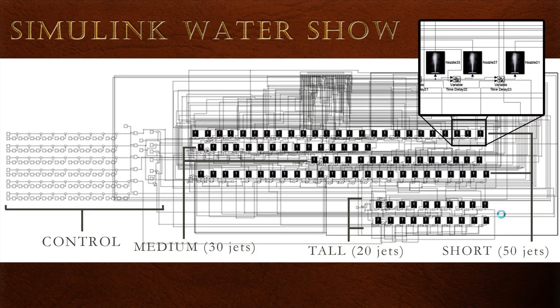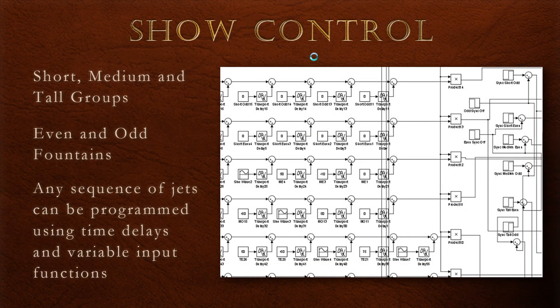Here's our final water show in Simulink. We have 100 water jets: 30 medium, 20 tall, and 50 short jets, along with their accompanying control diagram to the left. All those jets feed into the scope at the top, which sends their heights back to MATLAB. Using constants and time delays, we were able to control the medium, short, and tall groups, as well as the even and odd fountains independently. You can program any sequence of jets using constants or functions that can control the jets simultaneously or as propagating waves over time, and you'll see some of those functions in this video of our final show.